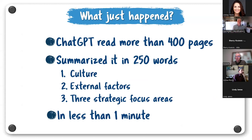ChatGPT read more than 400 pages of information and summarized it in 250 words — covering culture, external factors, and three strategic focus areas — in less than one minute. If you have one employee that can do that, give them a raise. But we don't need any employees to do that, and that's what's both exciting and a bit scary right now. This can be done rapidly without the bias that exists when people interpret data.